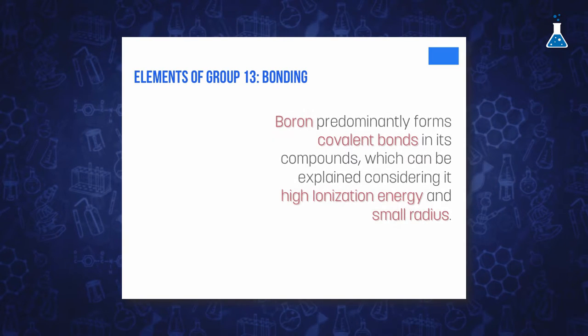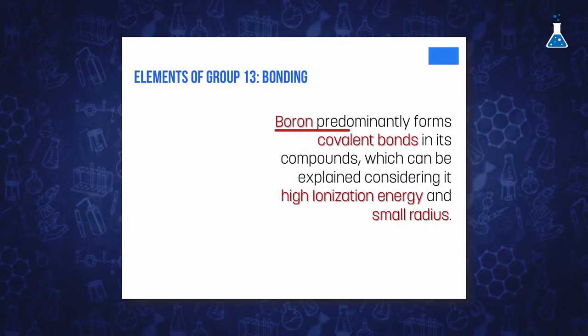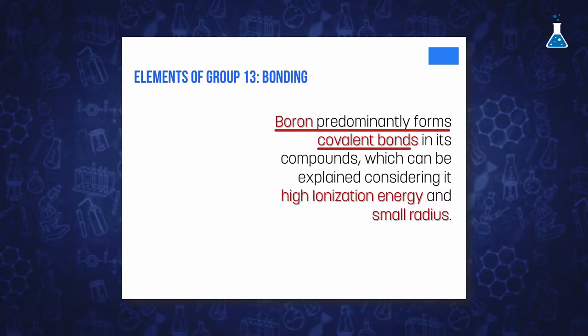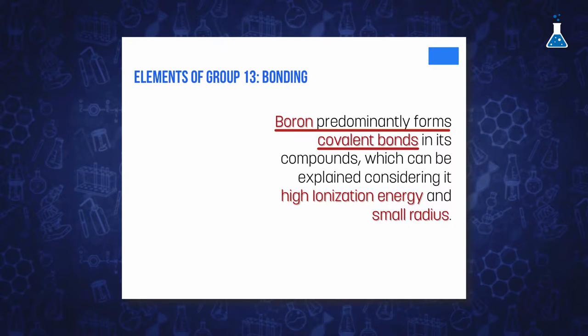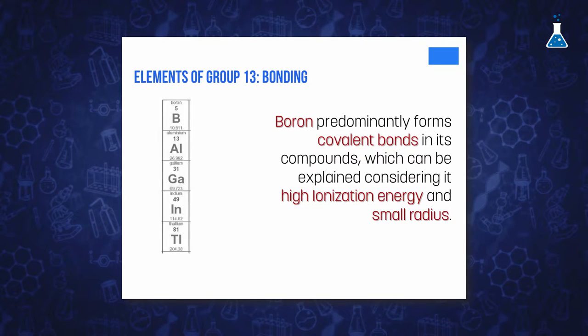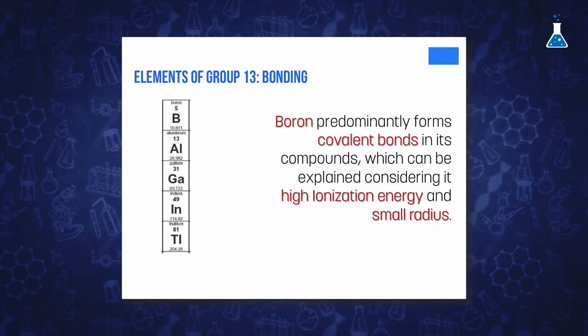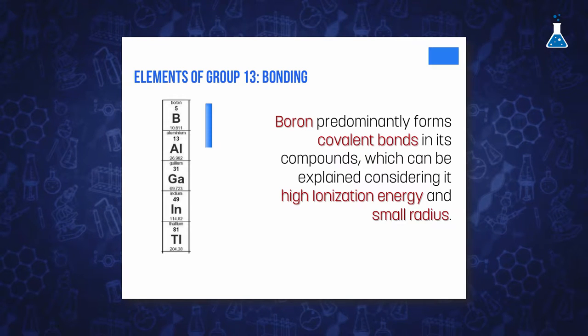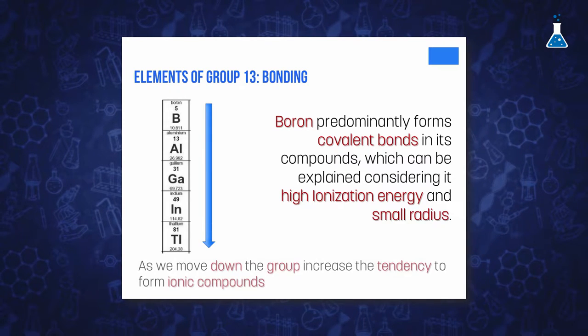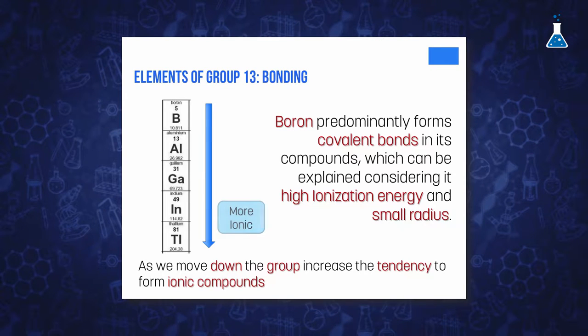Among all members of the group, Boron is the element which forms predominantly covalent bonds in its compounds. This behavior can be explained considering its high ionization energy and small radius. To a lesser extent, covalent bond formation is extended to all metallic members of Group 13, although as we move down in the group, the elements tend to form compounds that are mainly ionic.